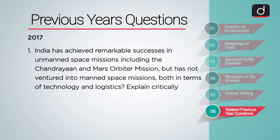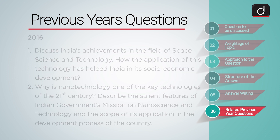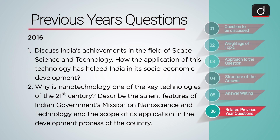In 2017, the following question was asked: India has achieved remarkable successes in unmanned space missions including the Chandrayaan and Mars Orbiter Mission, but has not ventured into manned space missions both in terms of technology and logistics. Explain critically. In 2016, the following questions were asked: Discuss India's achievements in the field of space science and technology. How has the application of this technology helped India in its socio-economic development? Why is nanotechnology one of the key technologies of the 21st century? Describe the salient features of the Indian government's mission on nanoscience and technology and the scope of its application in the development process of the country.